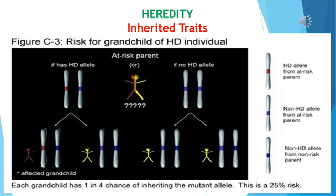Heredity. The most obvious outcomes of the reproductive process still remains the generation of individuals of similar designs. The rules of heredity determine the process by which traits and characteristics are reliably inherited. Let us take a closer look at these rules.